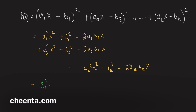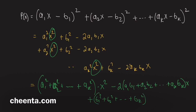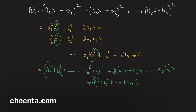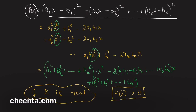Combining like terms, we get the general structure of a quadratic: (a₁² + a₂² + ... + aₖ²)x² − 2(a₁b₁ + a₂b₂ + ... + aₖbₖ)x + (b₁² + b₂² + ... + bₖ²). Notice that P(x) is a sum of squares, so as long as x is a real number, P(x) is always greater than or equal to 0.